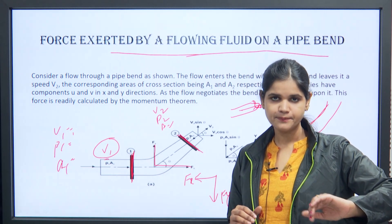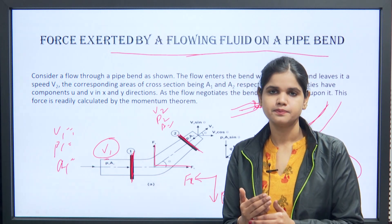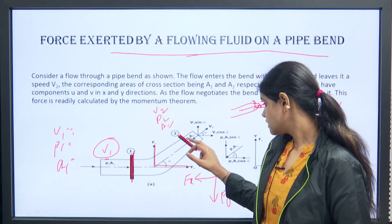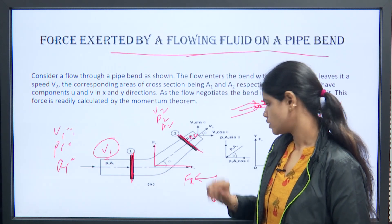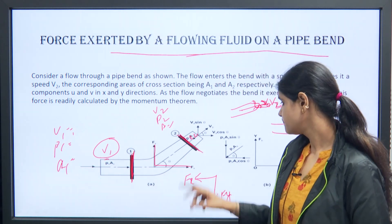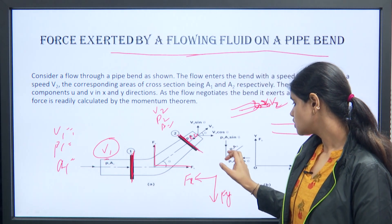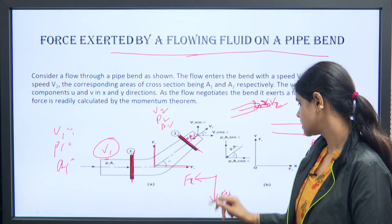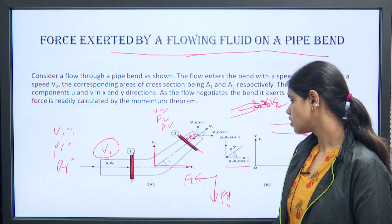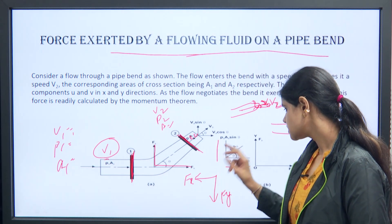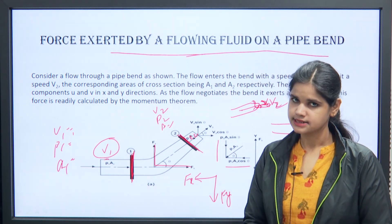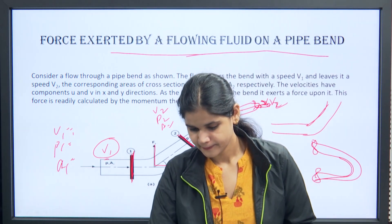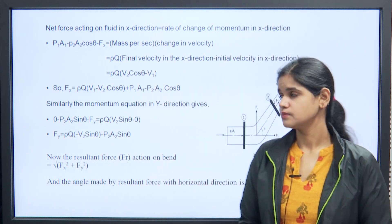The pressure force at section 2 is P2·A2. Its horizontal component is P2·A2·cos θ and its vertical component is P2·A2·sin θ. Let us now see the derivation.